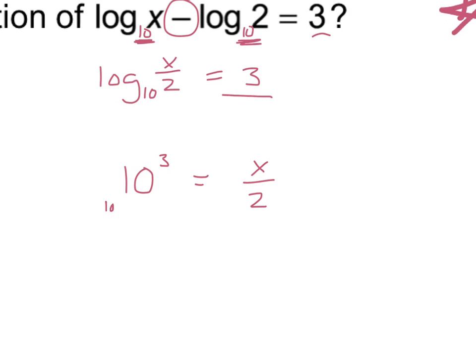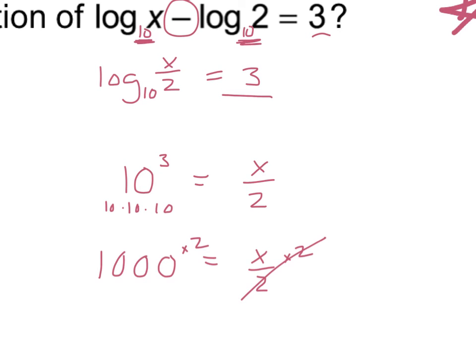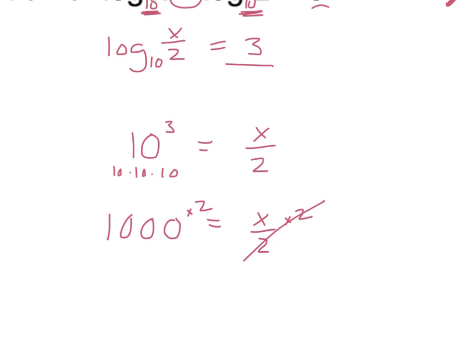So here we have 10 times 10 times 10, which is 1,000. And that's equal to x divided by 2. Now to get this to be x equals, we want x all by itself. Since x is being divided by 2, to get rid of that 2, we need to multiply both sides of this equation by 2. It's going to cancel out on the right side, and we have 1,000 times 2, which becomes 2,000. And this is our final answer.